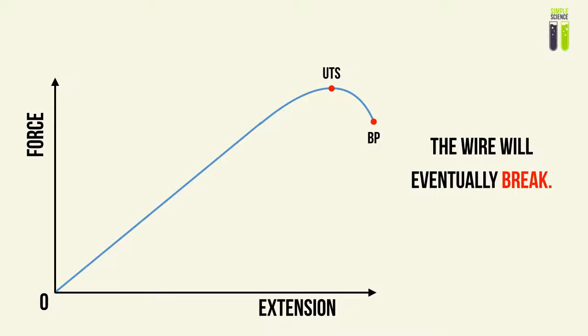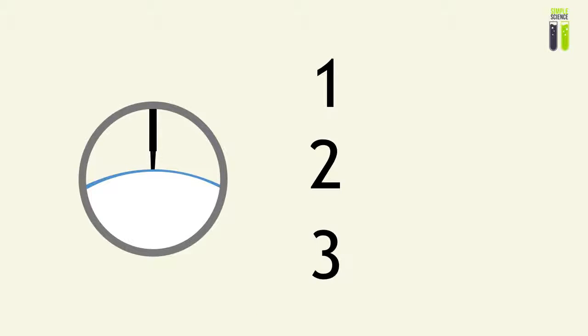So to quickly summarize this video, we must understand the ultimate tensile stress. It's basically the maximum stress which the cross section of the wire can withstand before the cross section deforms.